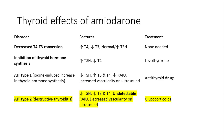Amiodarone can affect thyroid function, leading to decreased T4-to-T3 conversion, in which no treatment is needed. It can cause inhibition of thyroid hormone synthesis with high TSH, treated with levothyroxine supplementation. Amiodarone-induced thyroiditis type 1 involves increased thyroid hormones, so antithyroid medications are used. In type 2, TSH, T3, and T4 are decreased or undetectable, which is treated with glucocorticoids.